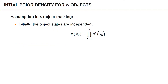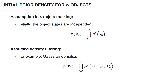A typical assumption in object tracking is that initially the object states are independent. And as we have discussed earlier in this course, multiple object tracking requires assumed density filtering. So we need to assume some density type for the object states using this initial prior. Gaussian densities is a very common assumption.